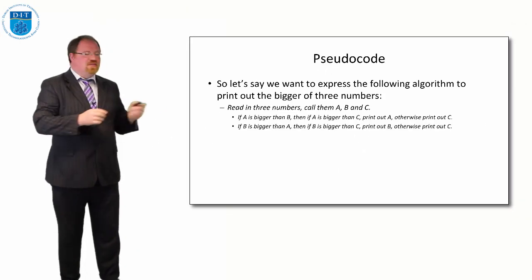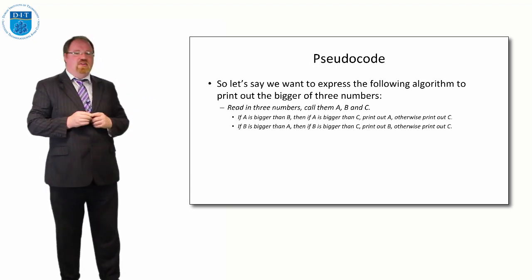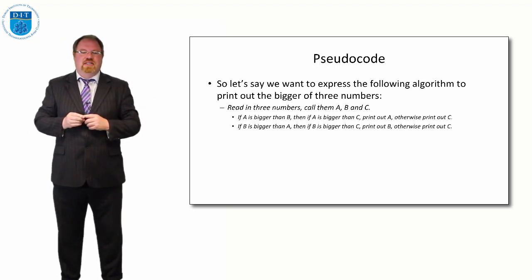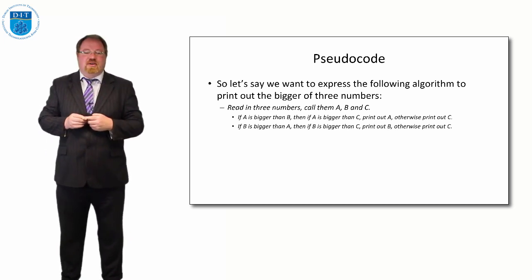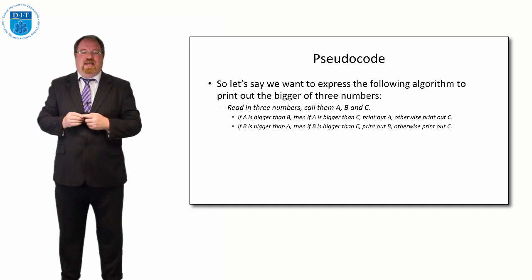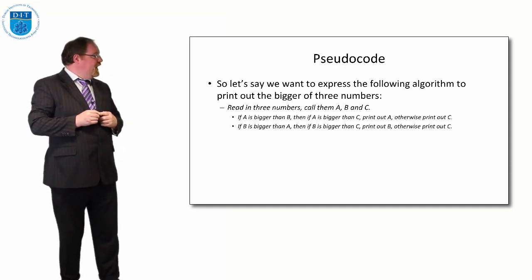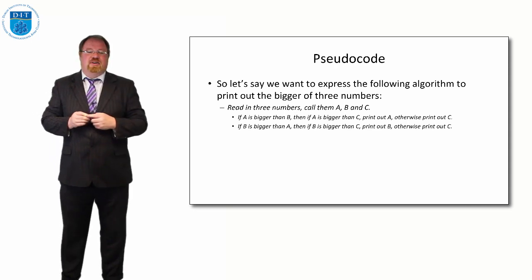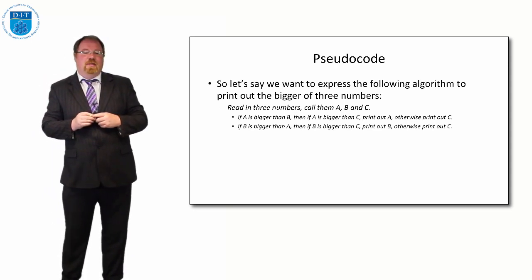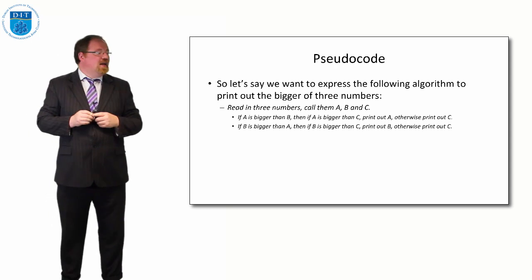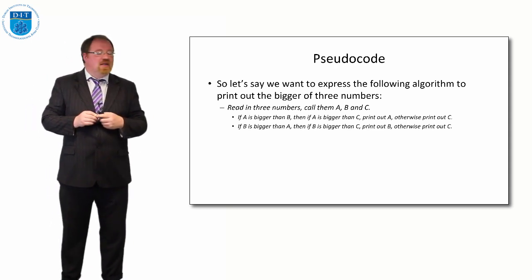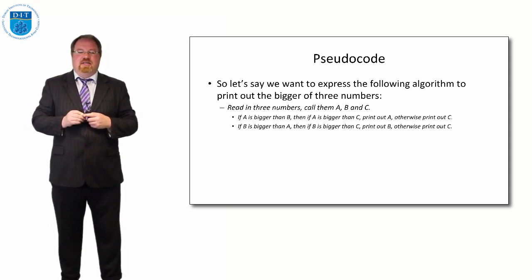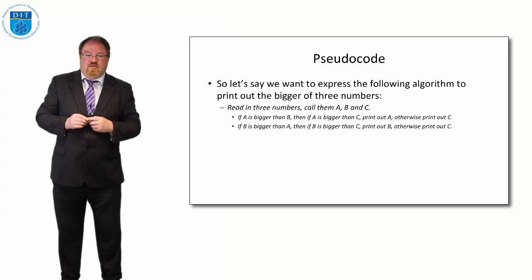Now let's express the algorithm to print out the biggest of three numbers. We read in three numbers a, b, and c. We check if a is bigger than b; if so, we check if c is bigger than a — if c is bigger than both a and b, then c is the biggest; if a is bigger than both b and c, then a is the biggest. If b is bigger than a, we compare b to c — if b is bigger than c and a, then b is the biggest; if c is bigger than b and a, then c is the biggest.